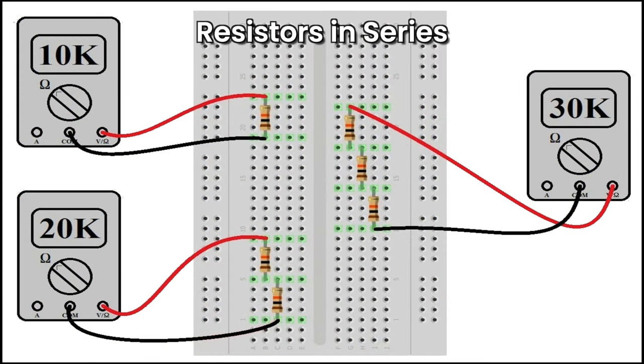Resistors in series: when resistors are connected in series, their resistances add up, and the total resistance is the sum of the individual resistances. For example, if 2 1 k omega resistors are connected in series, the total resistance is 2 k omega.